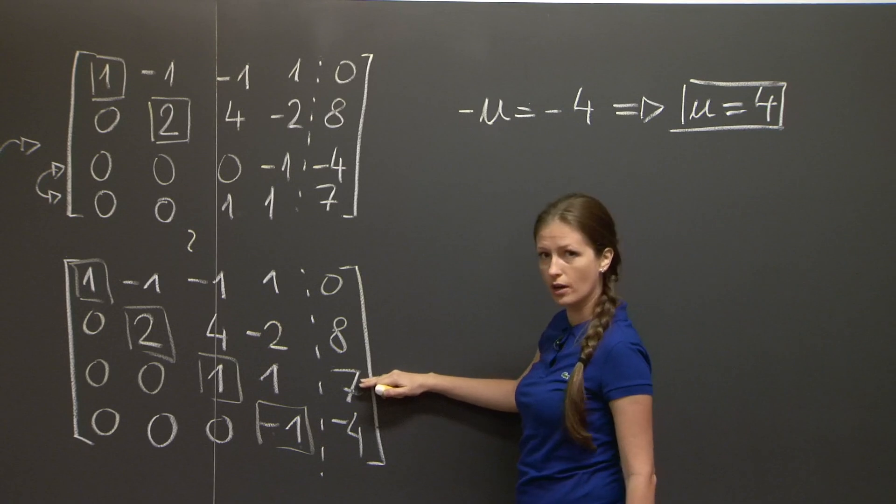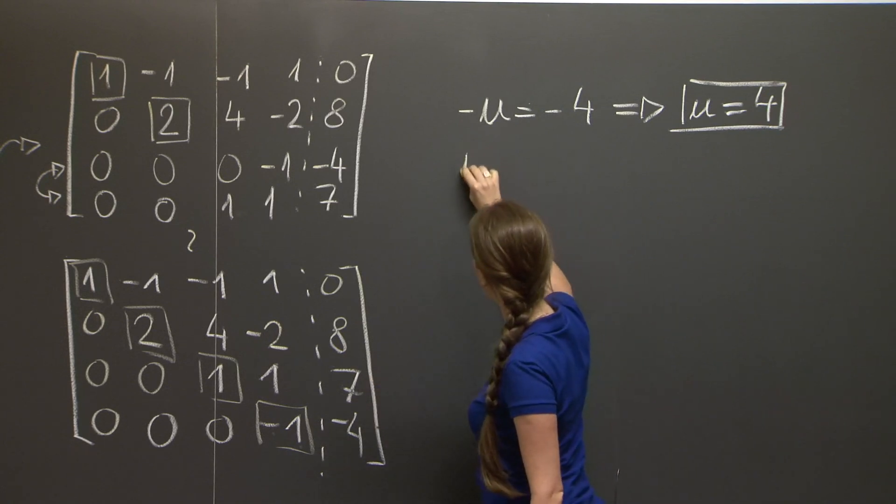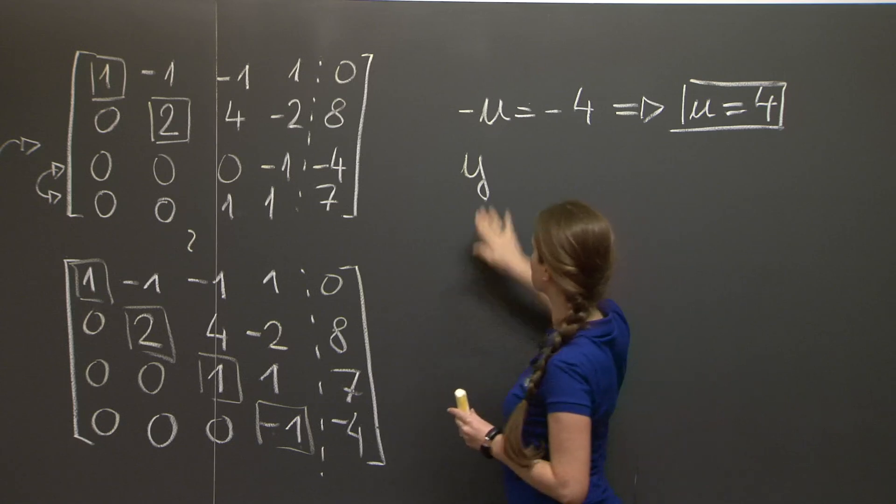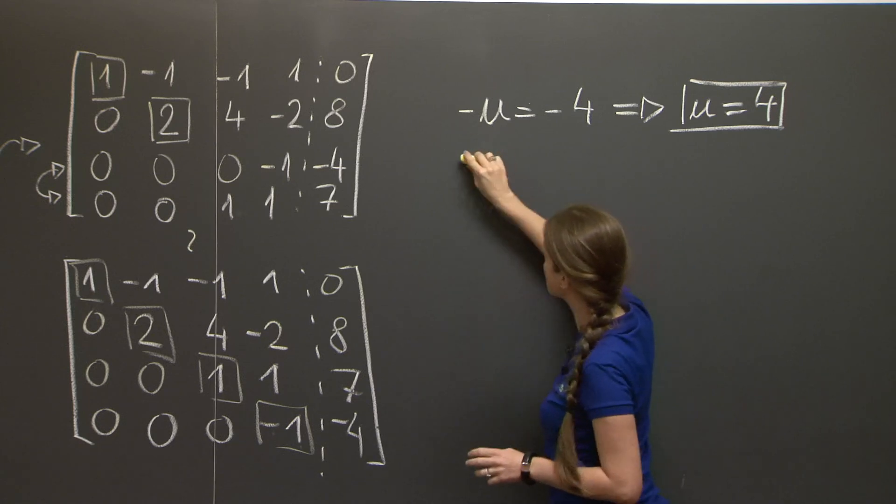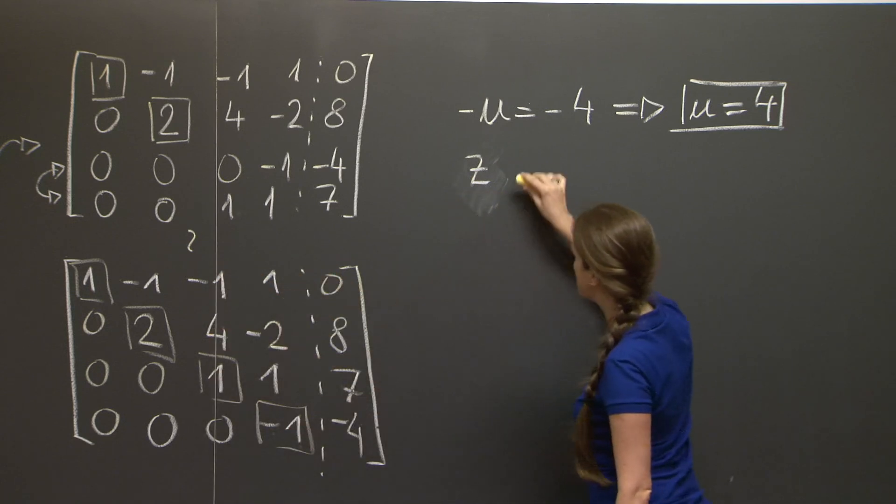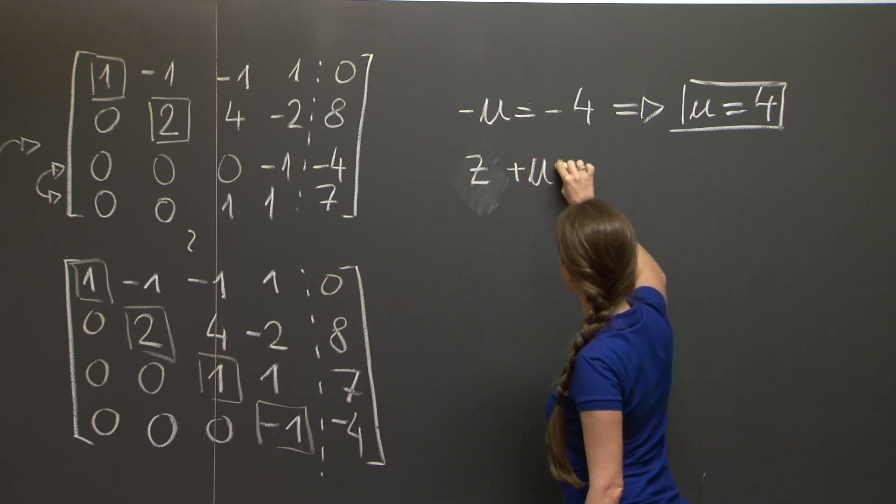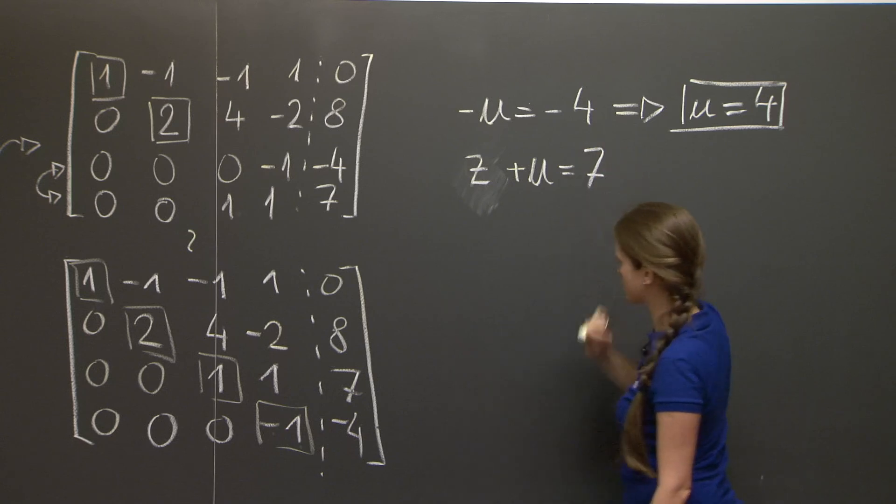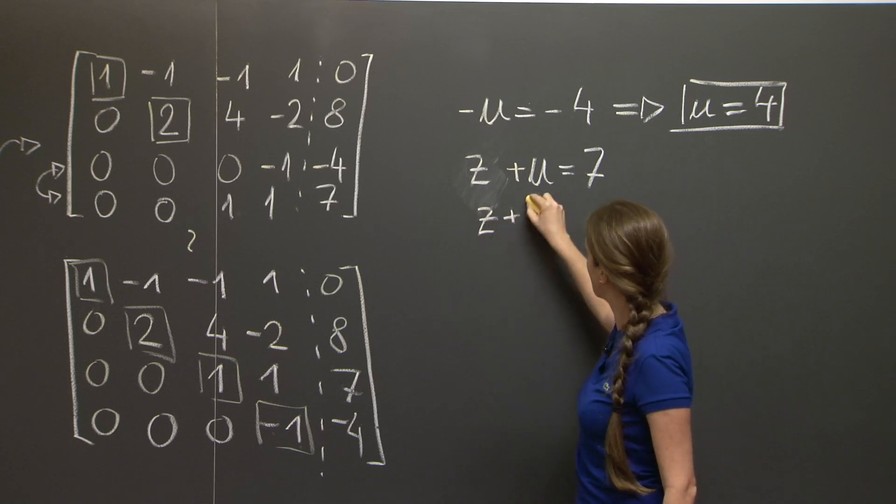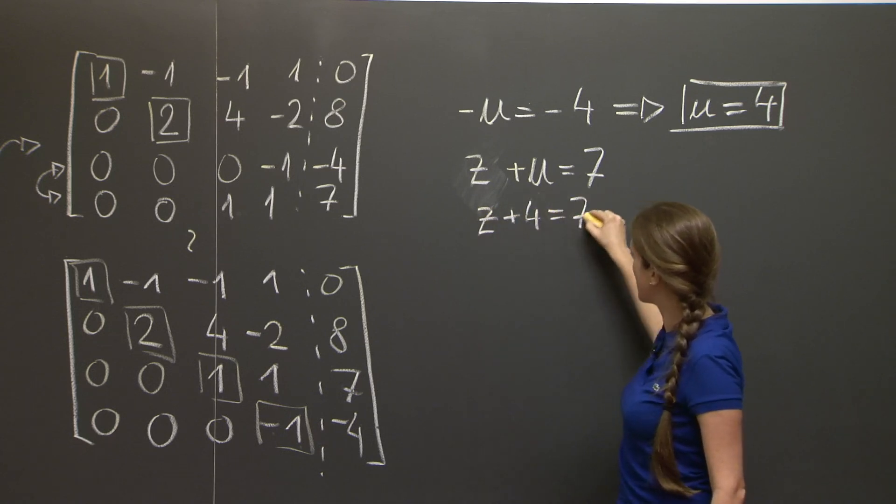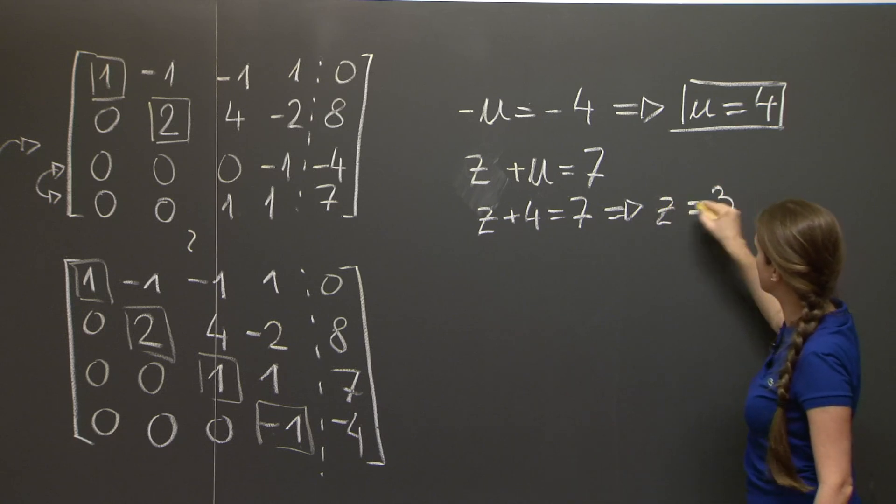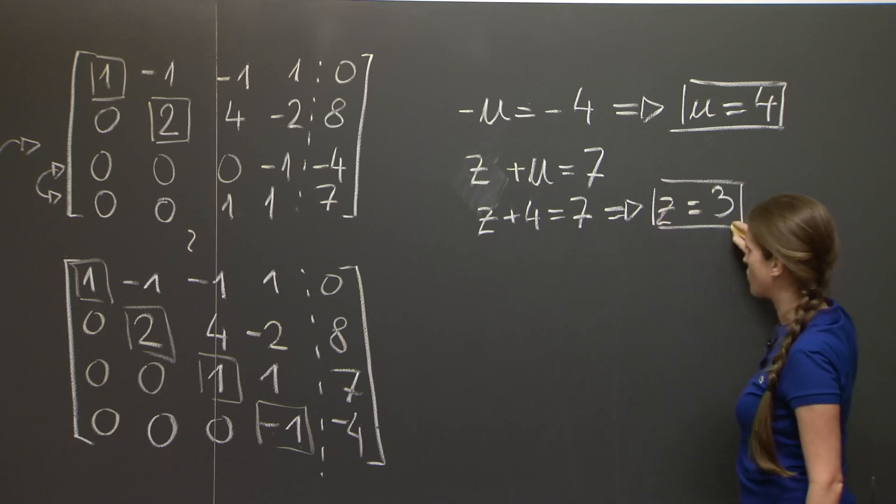Now let's go back to the third equation. The third equation reads z. The third column corresponds to z, plus u equals 7. But we know what u is now. So it reads z plus 4 equals 7, which just becomes z equals 3.